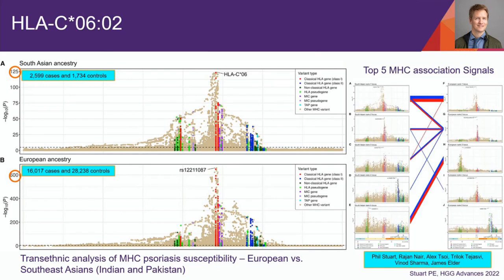There are multiple signals in the MHC region in psoriasis. The top one is the same in both Southeast Asian and European populations. The order shifts a little for the second through fifth most prominent peaks, but overall the composition of the MHC class I region is very similar across the populations studied. It's highly conserved — the order of risk might differ slightly from one population to the next, but overall it's actually highly similar.